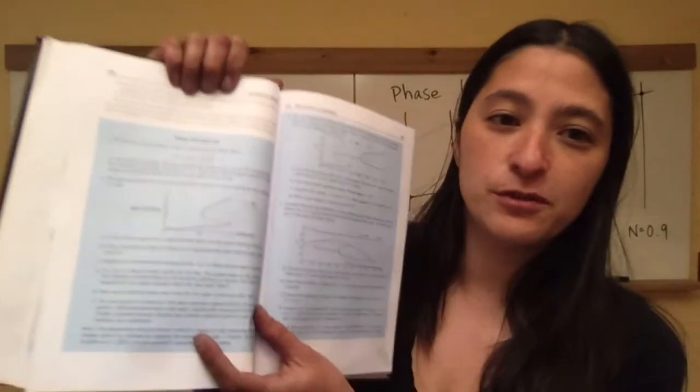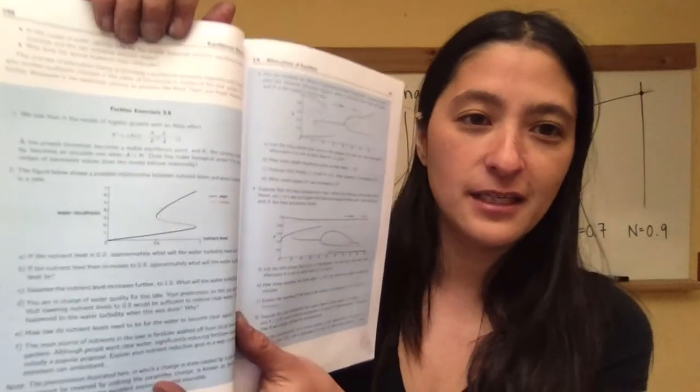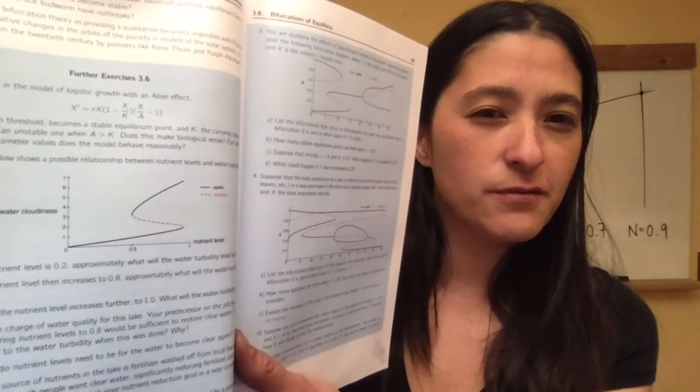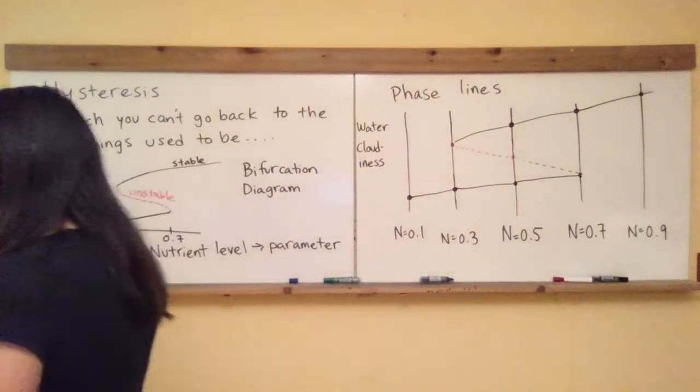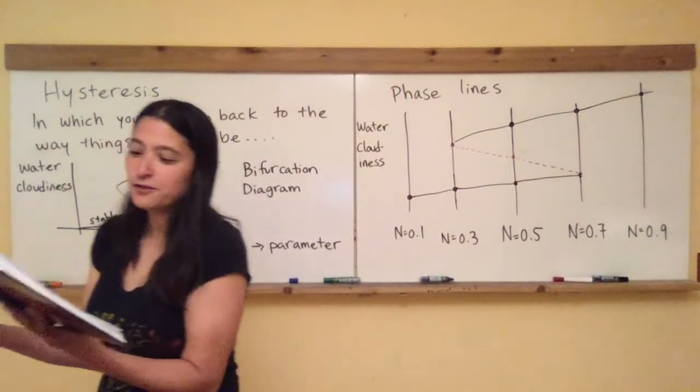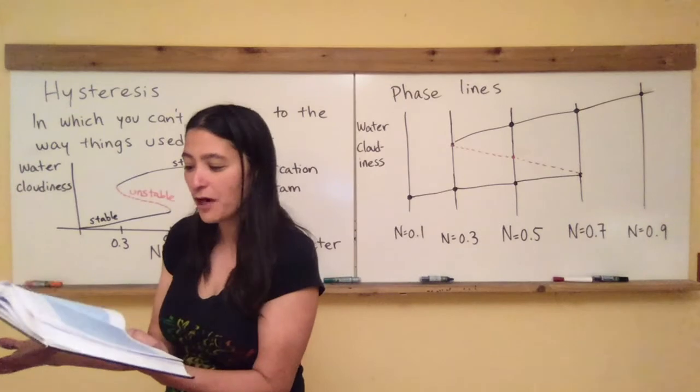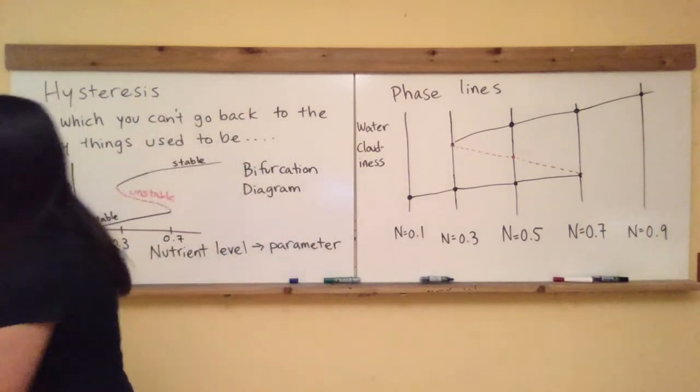I kind of changed the numbers a little bit so I wouldn't be exactly answering the question but a lot of what I'm going to say is kind of like the answers to these questions. First question says, if nutrient level is 0.2, approximately what will the water cloudiness be?